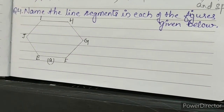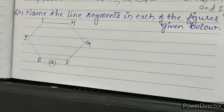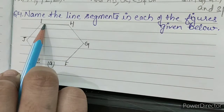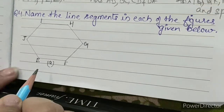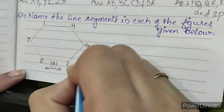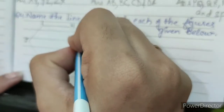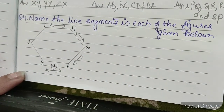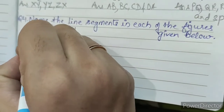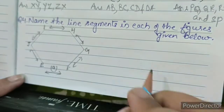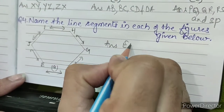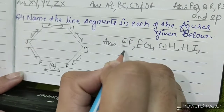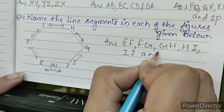Question number 4: name the line segments in each of the figures given below. A, the line segments are EF, FG, GH, HI, IJ and JE. So our answer is EF, FG, GH, HI, IJ and JE.